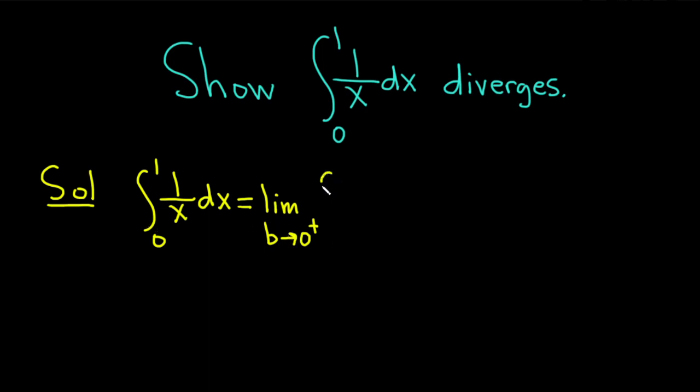And then we have the integral. So instead of 0, we write the b, and then here's the 1, and here we have 1 over x dx.